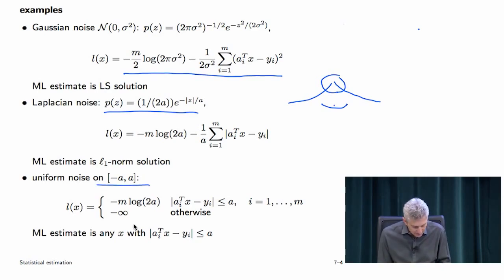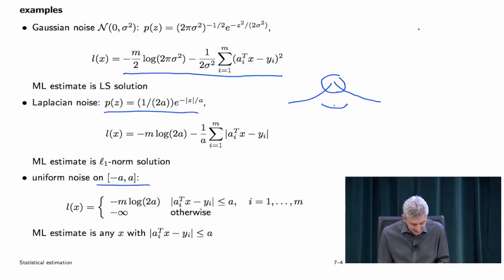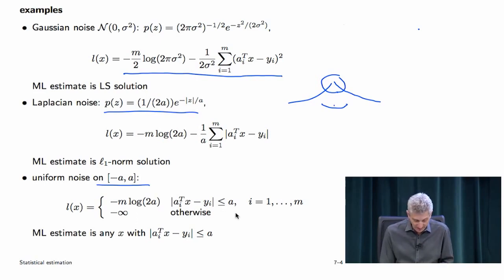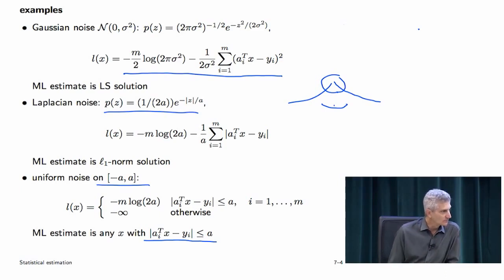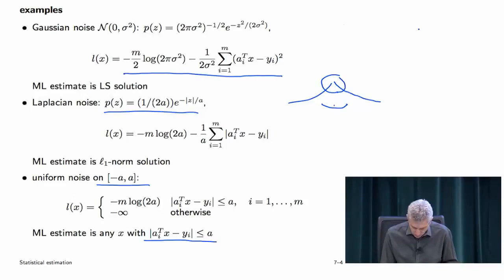For uniform noise, the log likelihood function is just constant provided you are consistent with the measurement, so you simply solve a feasibility problem. There are multiple maximum likelihood solutions — you choose one satisfying this condition. All of those are MLE estimates, though their statistical properties would not all be equally good. Most MLE theory assumes the log likelihood has a unique maximum, which is not the case here.